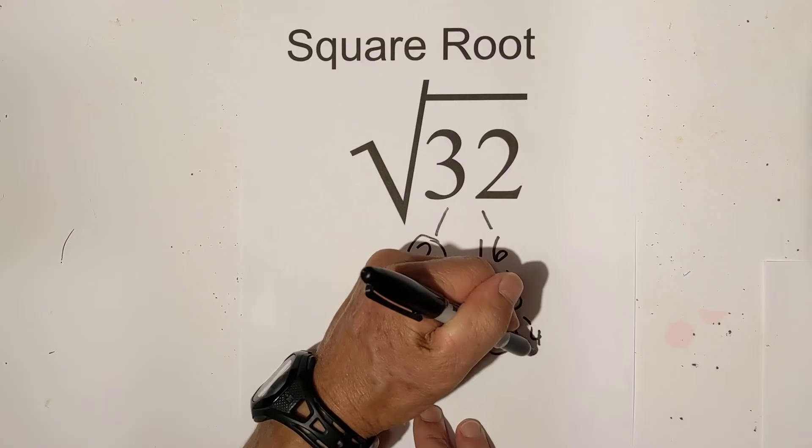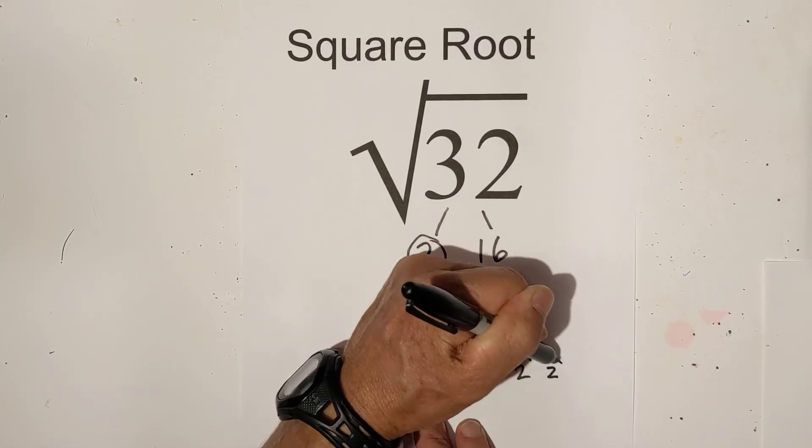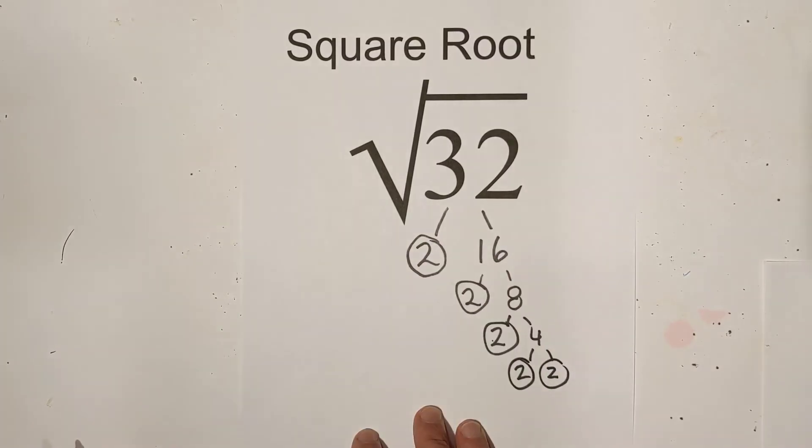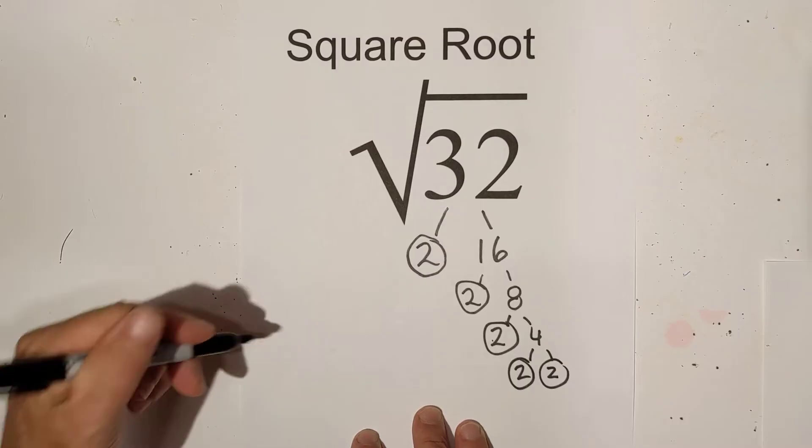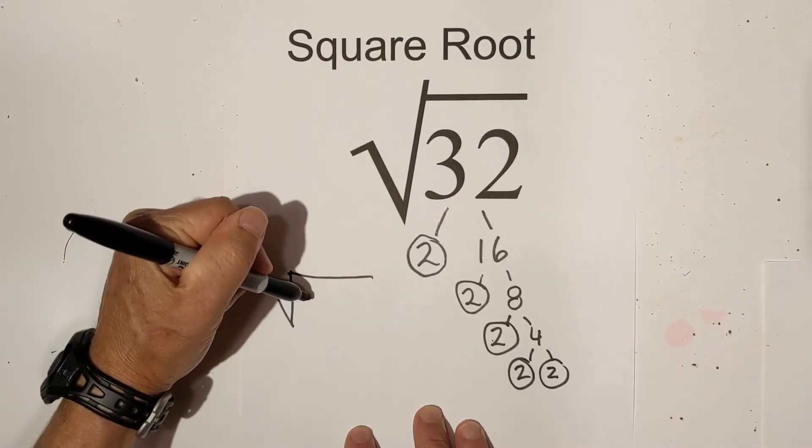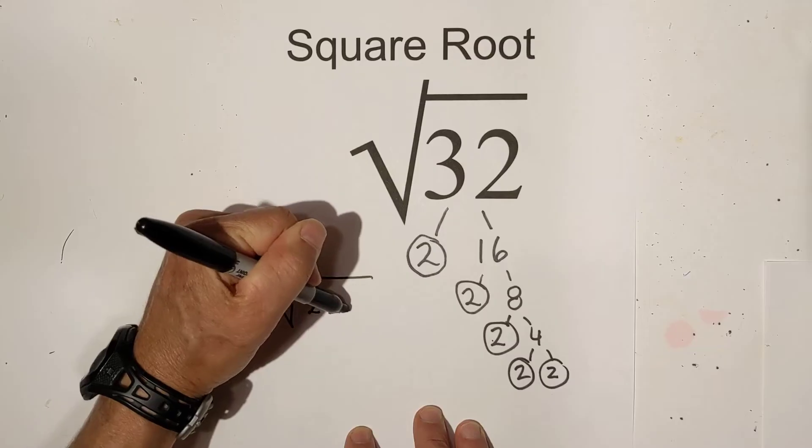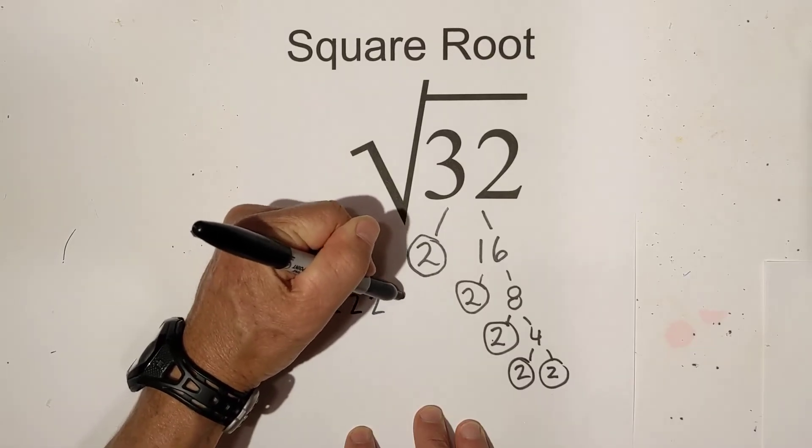And 2 times 4, then 2 times 2. So now I'm down to just prime numbers. I have all the prime numbers of 32. So I'll place them under the radical sign. And here we go, we have five 2s.